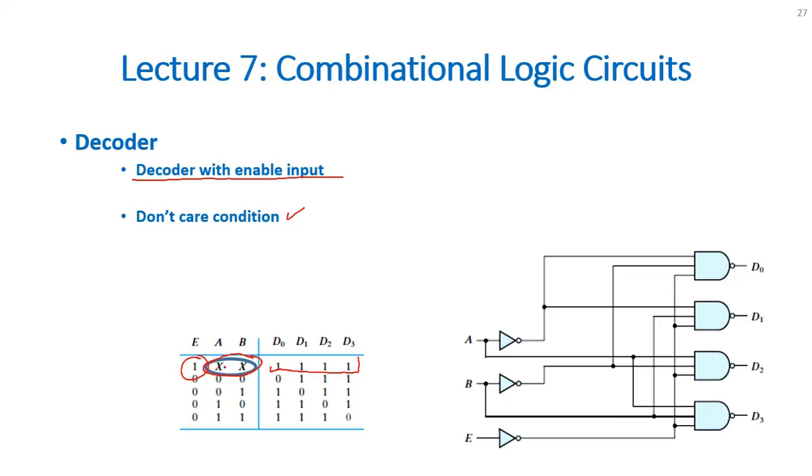Whatever value is available at A and B, if it is 0 1, 1 0, or 1 1, or 0 0, the output will always remain high. This is called the don't care conditions. Now, if we change the value of enable to 0, now this is acting like the simple decoder.